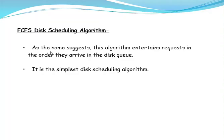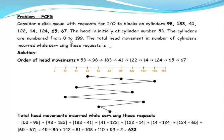Let's see an example to illustrate the concept of FCFS. Let us assume that there are 200 cylinders in a disk, numbered from 0 to 199, and the disk head is initially at cylinder number 53. We have a set of requests: 98, 183, 41, 122, 14, 124, 65, and 67. This means we want to read data from these cylinders.